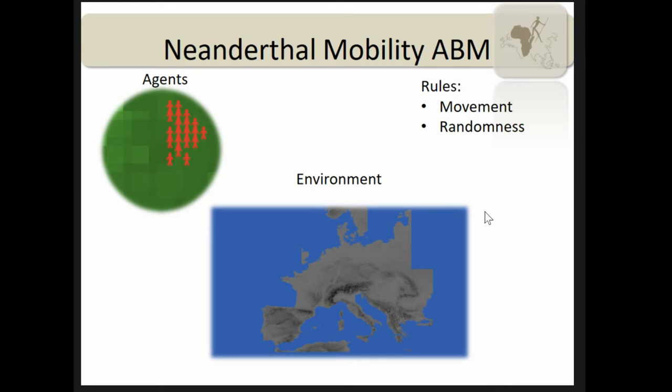This is the model basically. As with all agent-based models, it consists of agents and there are some rules for how they interact, and there's an environment. The agents represent Neanderthal individuals and they move across the landscape. The movement is not totally deterministic — we have some randomness included — and the European landscape serves as the environment.